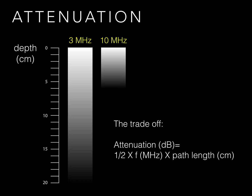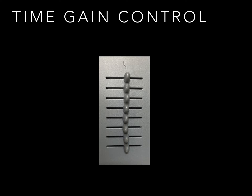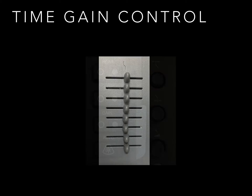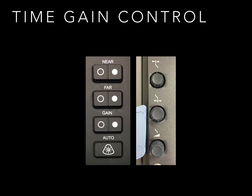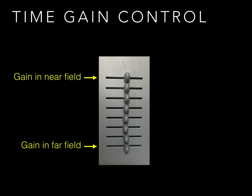Lower frequencies penetrate better than high frequencies because high frequencies lose energy, or are attenuated, rapidly with depth. Here we see the difference in attenuation with a 3 megahertz probe that you might use for echo imaging a relatively deep structure, versus a 10 megahertz probe as you might use for a radial art line. We can compensate for this to a certain extent using the time gain control, or TGC. On most machines this is represented by sliders, although on some machines you may have a couple of dials or other controls instead. The TGC controls the gain, or brightness, of the image near and far from the probe independently. So we can turn up the gain in the far field to get a more even brightness to the image.